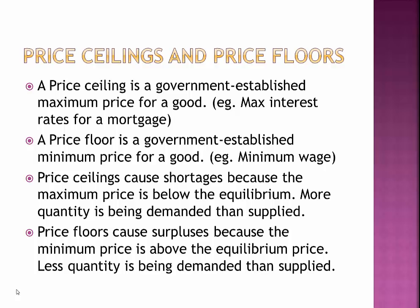Now I'll talk about price ceilings and price floors. Price ceilings and price floors can only be created by the government, usually to correct for failures in the free market. Price ceilings are maximum prices for a good — hence the word ceiling. They're usually created if the equilibrium price is too high to be optimal for society; a real-world example is maximum interest rates on a mortgage. This creates shortages because quantity demanded is higher than quantity supplied. Price floors are the opposite — minimum prices for a good, created when the equilibrium price is deemed too low. Think of minimum wage. They create surpluses because quantity supplied is large and quantity demanded is small, since the equilibrium price is lower than the floor.